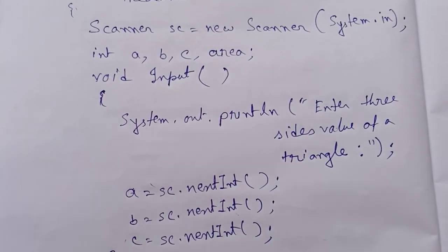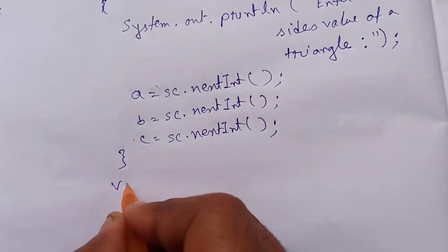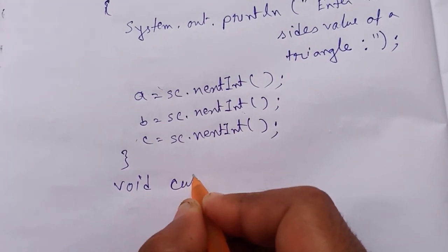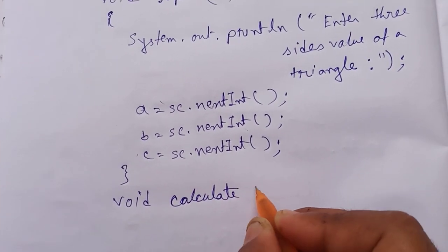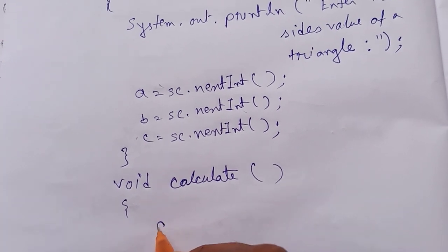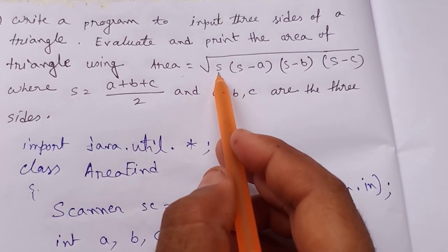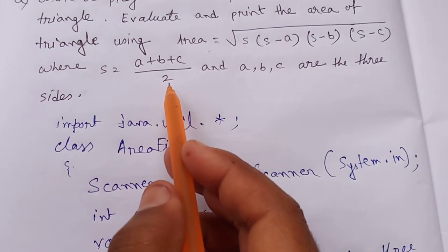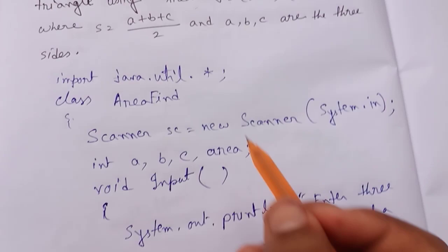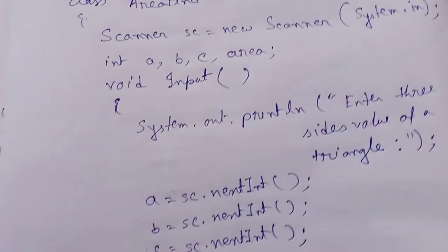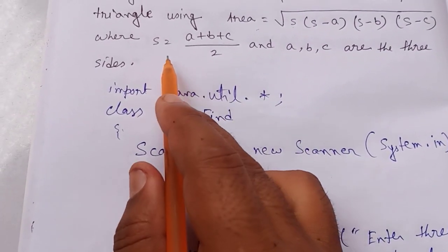Now coming to the calculation portion. I am creating another method: void calculate(). Before finding the area, see the formula — s is here. The value of s equals a plus b plus c. Since there is a division by 2, the result can be a decimal, so s should be of type double. So we change the area variable from integer to double — double area, and double s.